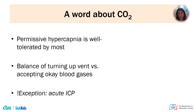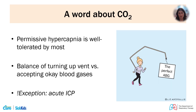Regarding blood gas ranges — there may be a wide range of gases that present in front of you. Generally in pediatrics with respiratory disease, it is acceptable to allow permissive hypercapnia, which is well tolerated by most pediatric patients. There is always a discussion about turning up the ventilator versus the potential for ventilator-induced lung injury versus accepting okay blood gases. There are cases where normal blood gases must be targeted, such as traumatic brain injury with elevated ICP. Always ask yourself whether turning up the ventilator is truly the right choice.